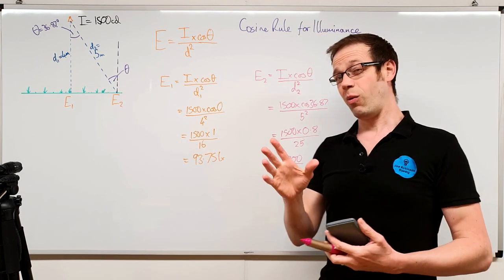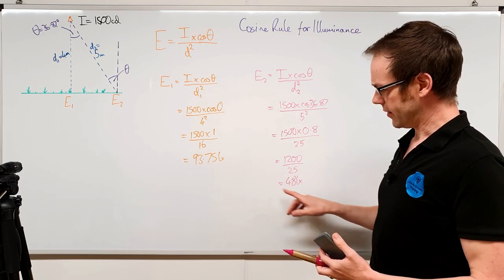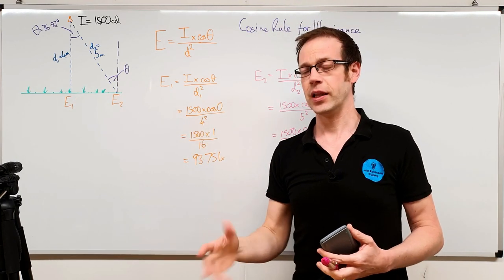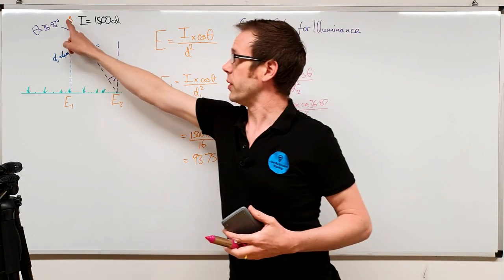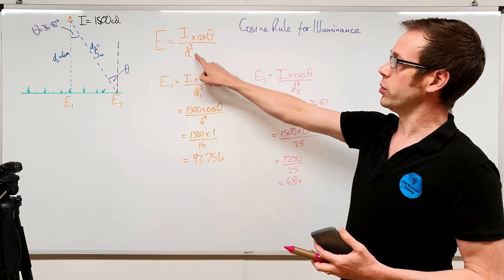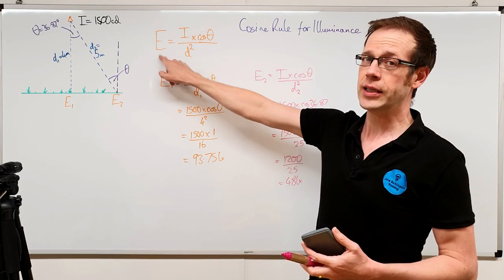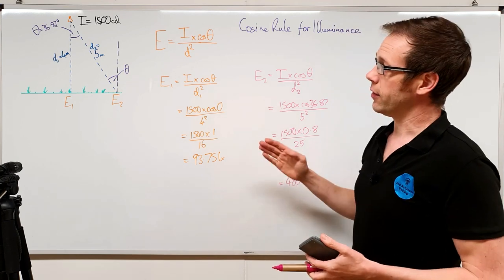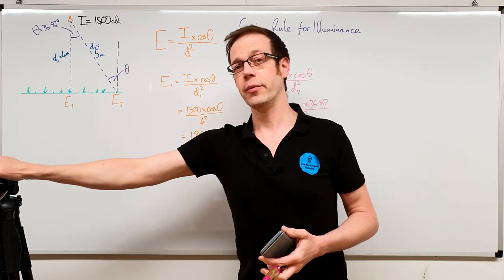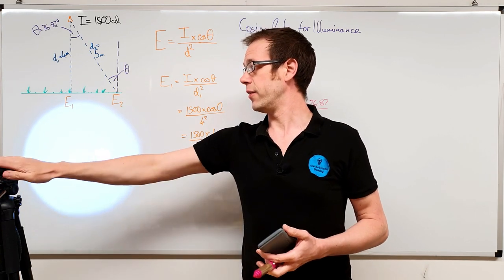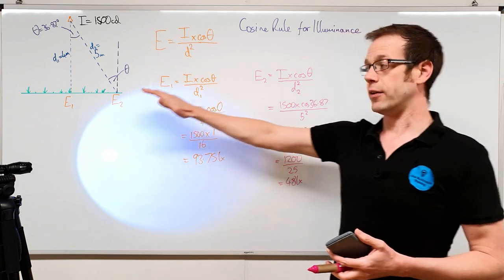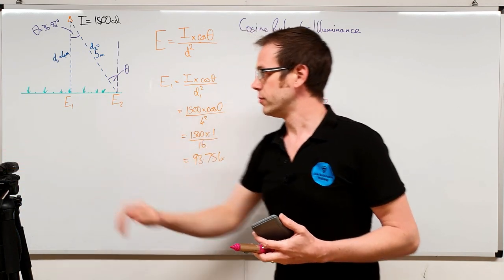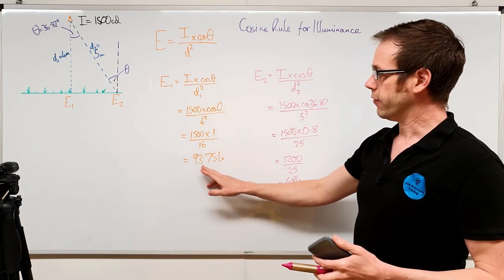The light level has dropped significantly from position one to position two just by taking a short walk. Why? Two reasons: first, we're a little further from the light source, and a small change in distance causes a quite large change in the measured light level. Second, the light is now hitting the surface at an angle — just like we demonstrated with the torch — so instead of shining directly onto the surface, it's coming in at an angle, which reduces the light level at every single point within that pool of light.